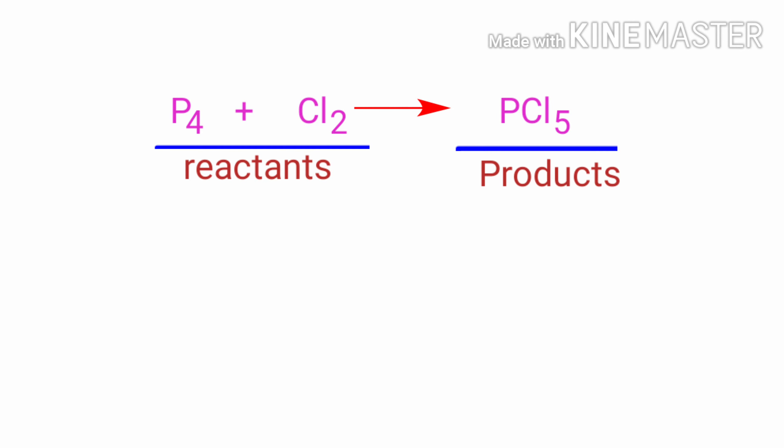In this equation, the reactants are Tetraphosphorus and Chlorine, and the product is Phosphorus Pentachloride. If you look at this equation, the equation is not balanced.